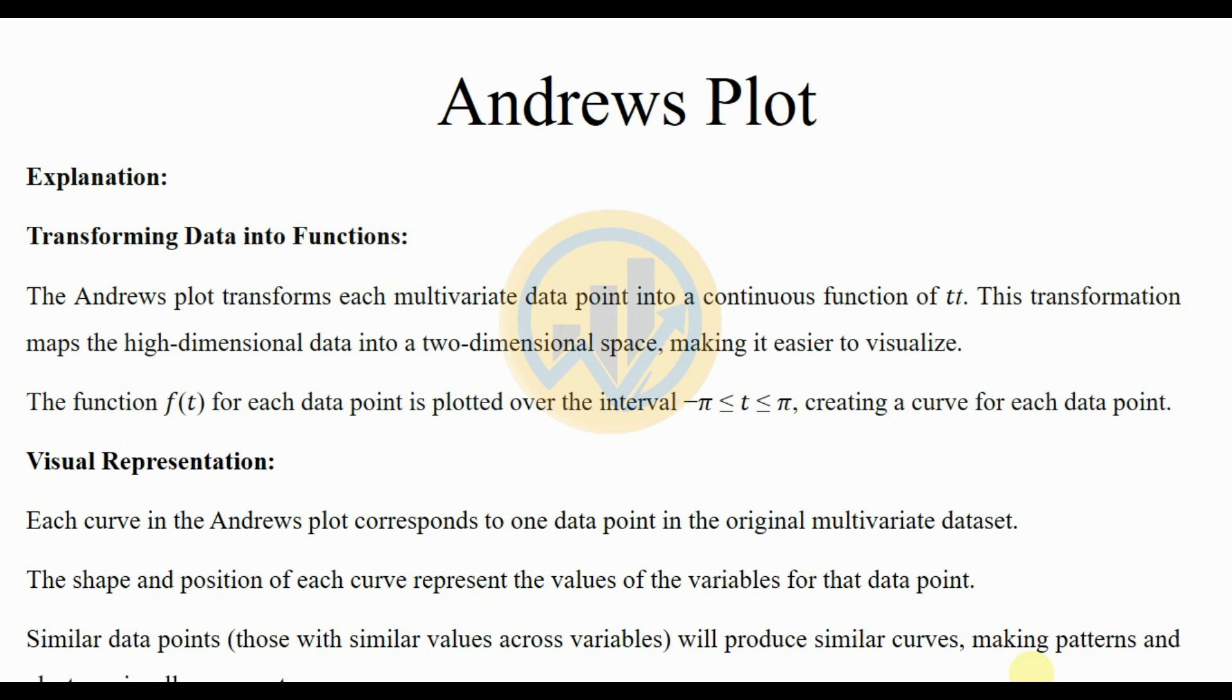Explanation: Transforming the data into functions. The Andrews plot transforms each multivariate data point into a continuous function of t. This transformation maps the high-dimensional data into a two-dimensional space, making it easier to visualize. The function f(t) for each data point is plotted over the interval -π < t < π, creating a curve for each data point. Visual representation: each curve in the Andrews plot corresponds to one data point in the original multivariate dataset. The shape and position of each curve represents the values of the variables for that data point. Similar data points will produce similar curves, making patterns and clusters visually apparent.